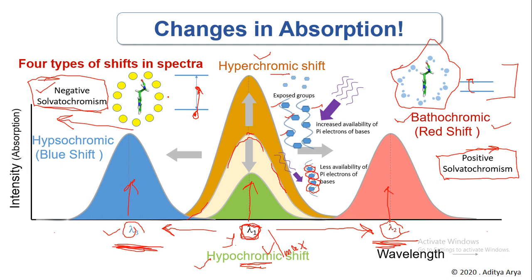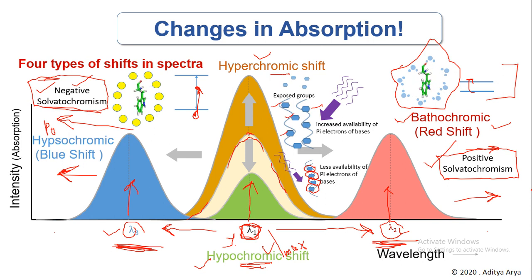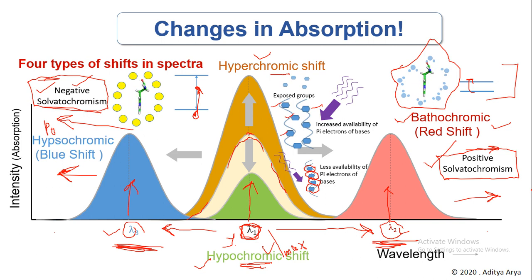The absorption pattern may change in either direction. Some molecules show a blue shift when added to a more polar solvent — if increasing polarity of the solvent causes a shift towards the blue side or decreased lambda max, this is known as negative solvatochromism. On the other hand, if increasing polarity leads to a red shift or bathochromic shift, that situation is known as positive solvatochromism.